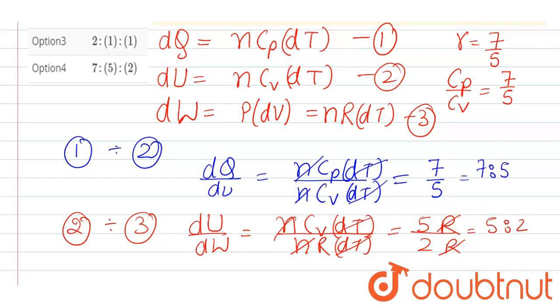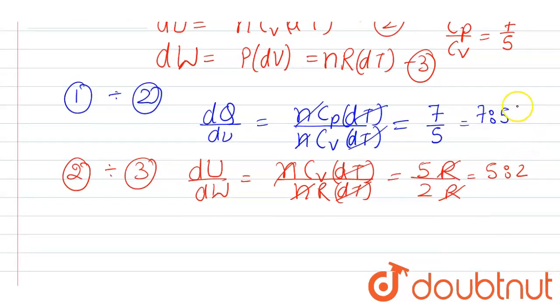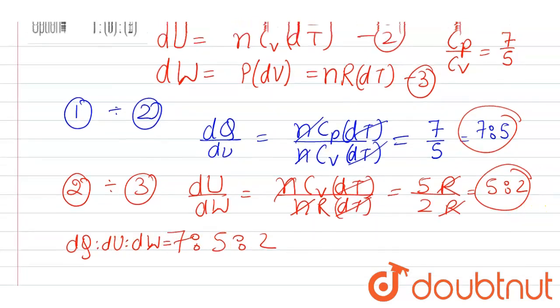Now on comparing with both, combining both, then we get 7 ratio 5 ratio 2. That is the ratio of dQ ratio dU ratio dW, which means that the correct option of this question will be option 4.